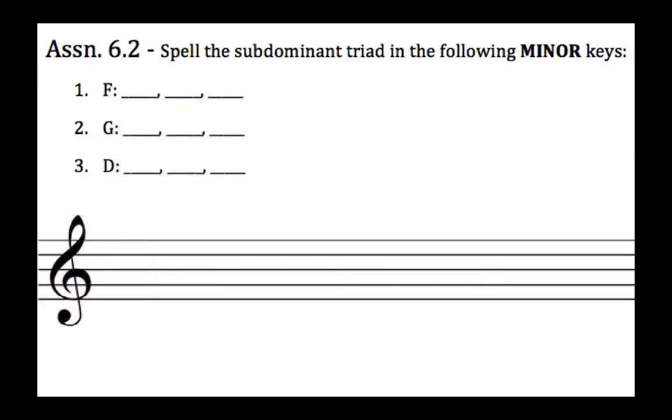The first minor key listed is F minor. The key signature for F minor is four flats, and the scale is F, G, A♭, B♭, C, D♭, E♭, and F.